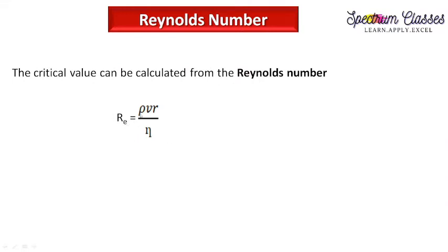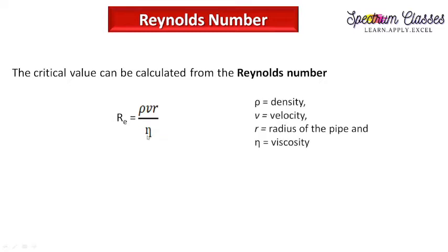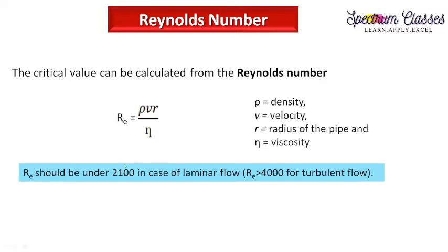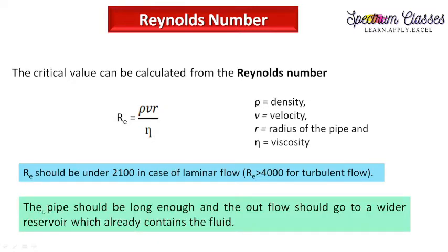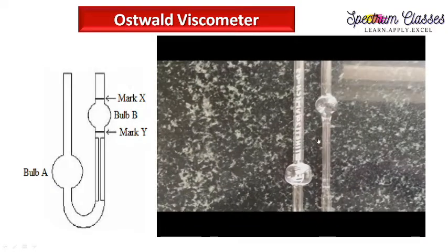The Reynolds number is given by: Re = ρ v r / η, where ρ is the density of the liquid, v is the velocity, r is the radius of the pipe, and η is the viscosity. For laminar flow, the Reynolds number must be under 2100; if it is more than 4000, the flow will be turbulent. Based on these conditions, the Oswald viscometer is designed so that the pipe is long enough and the outflow goes to a wider reservoir which already contains the fluid.